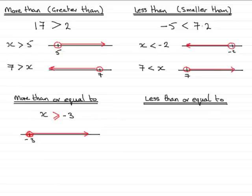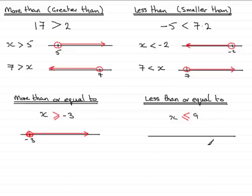The less than or equal to symbol is the less than sign with an equals line underneath it. If x is less than or equal to 9, we mark 9 on the number line, draw a circle around 9, and because we're allowed to equal 9, we shade it in. We then take values in the direction less than or equal to 9 — so 9, 8, 6.3, minus 7, and so on would all satisfy this inequality.